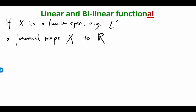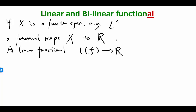So that functional is a univariate functional: you give me one function, I give you a real number. A linear functional L means that L(f) is a real number, and if you scale f by any alpha, this has to equal alpha times L(f).